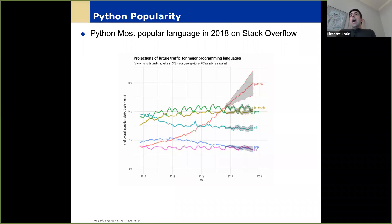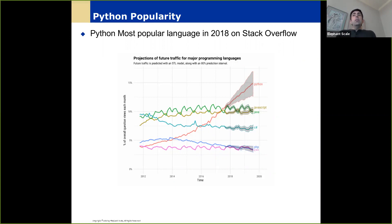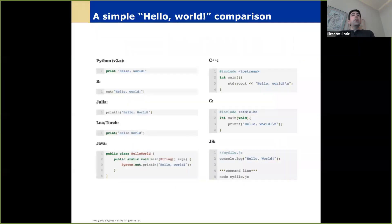On Stack Overflow, Python has become the most popular language, overtaking JavaScript and Java and other languages. The fact that Python has grown a lot in popularity is undeniable. One thing about Python — as a dynamic language, if you want to do Hello World, you just say print hello world. That's all you have to do. Compare that to other languages which are a lot more verbose.